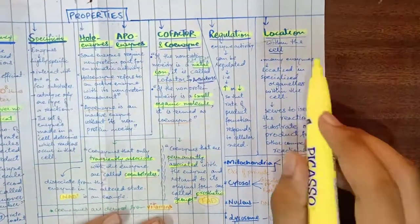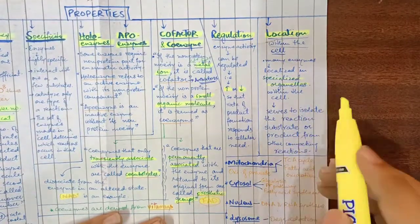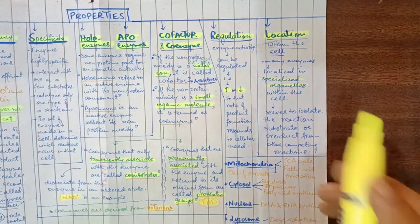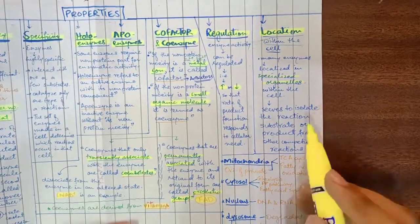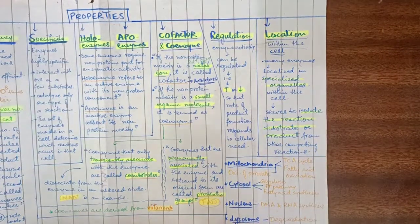Another property is location within the cell. Many enzymes are associated with organelles like ribosomes and mitochondria. This helps isolate the reaction substrates from other competing reactions.